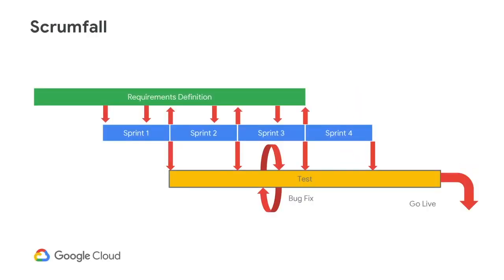Teams that move away from waterfall have a tendency to move into scrum fall. It breaks the work into sprints and starts testing cycles early on, so it helps the team pivot and provide early visibility to progress. However, because testing is separated as a post-sprint activity and not included during requirements definition and sprints, testing and bug fix time is elongated and long release cycles invariably happen.